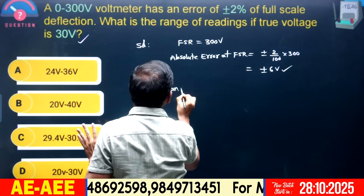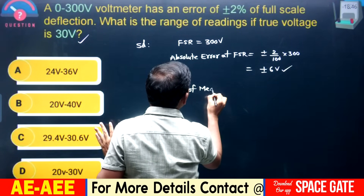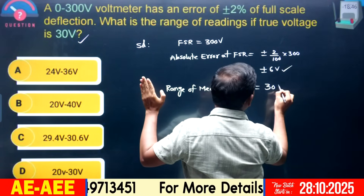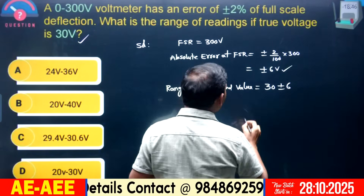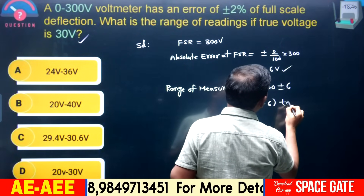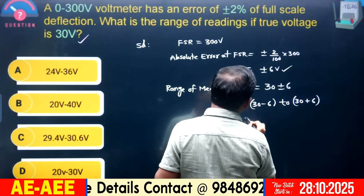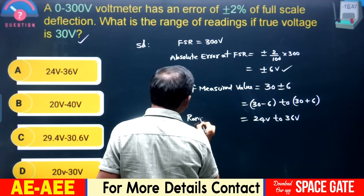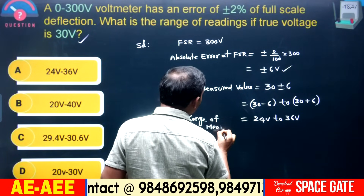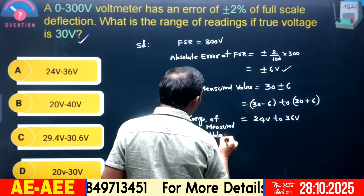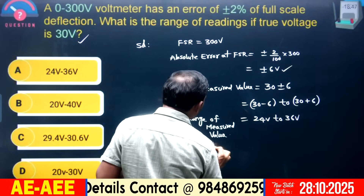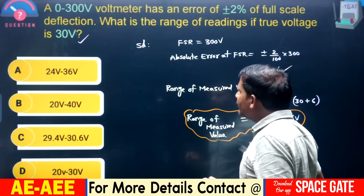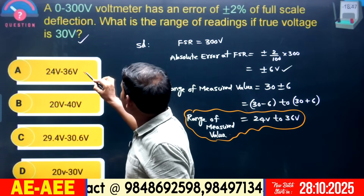To get the range of measured value: 30 volts is the true value, and ±6 volts is the absolute error. Subtract: 30 − 6 = 24 volts. Add: 30 + 6 = 36 volts. The range of measured values is 24 volts to 36 volts. This is also a most important model for error analysis. In the given options, 24 volts to 36 volts — option A is the right answer.